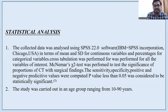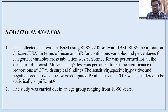Statistical analysis was done using SPSS 22.0 software in terms of mean and standard deviation for continuous variables and percentage for categorical variables. Cross-tabulation was performed for all variables of interest. McNemar's chi-square test was performed to test the significance of proportions of CT with surgical findings. Sensitivity, specificity, positive and negative predictive values were computed. A p-value less than 0.05 was considered statistically significant.